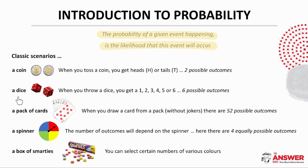A standard dice has six sides with the numbers one to six on them. In other words, when you roll a dice, you have six possible numbers it could land on. If we consider a pack of cards, there are 52 cards in a pack if you leave out the jokers. We will look at a pack of cards in more detail a little bit further in the video.